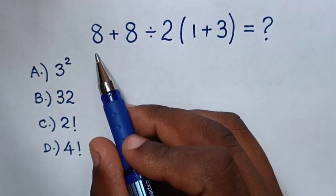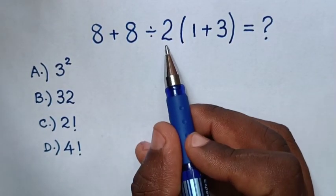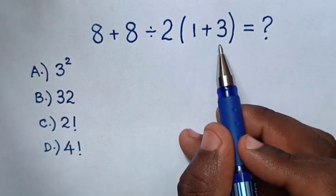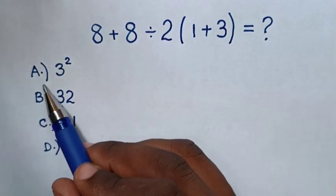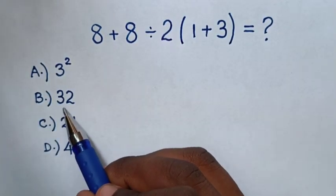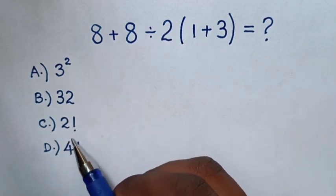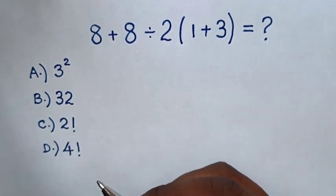Hello, how to solve 8 plus 8 divided by 2, brackets, 1 plus 3, to choose between the answer A, 3 square, B, 32, C, 2 factorial, D, 4 factorial.